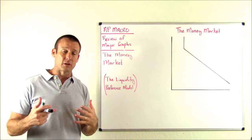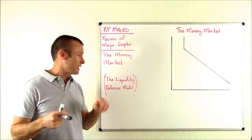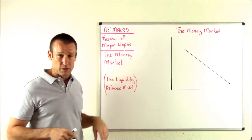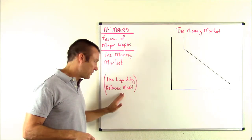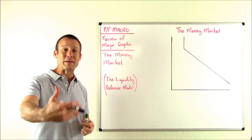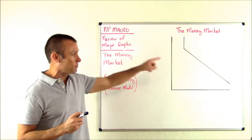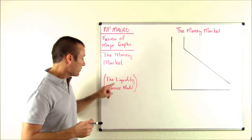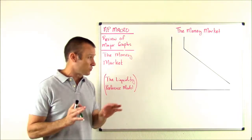This name is used a little less often than the money market. AP Macro knows that graph as the money market. But I want to talk about this name just for a second right here at the beginning of this video because it's going to help us understand that graph better — the liquidity preference model.